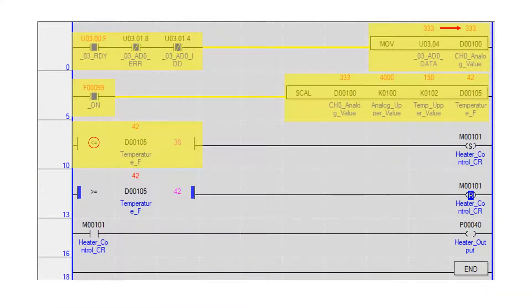Using a less than or equal to compare instruction, the current temperature is compared to a set point of 38. If the temperature is at or below 38 degrees, the internal bit heater control CR is set.